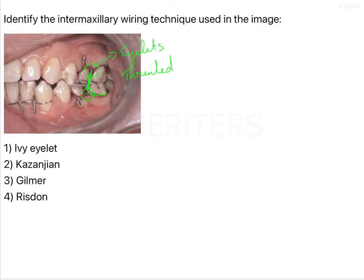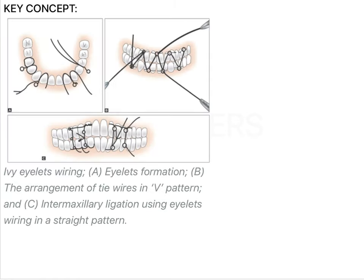So this is nothing but your IV eyelet which goes by the common sense as well. So I will give you a very brief idea about this, how to form the eyelet. You will be forming an eyelet and then from the buccal side towards the lingual side or the palatal side you will be bringing the two wires through the interdental area from the buccal to lingual side.